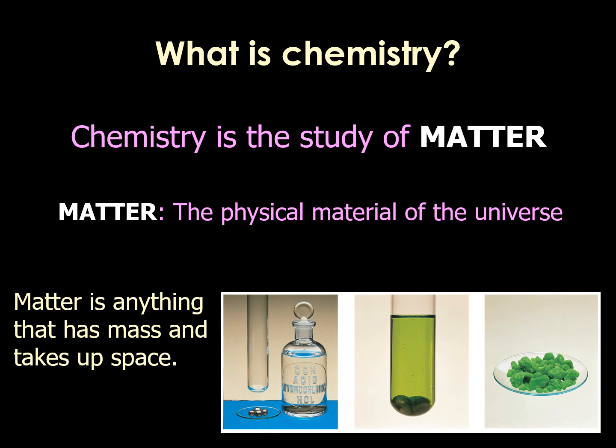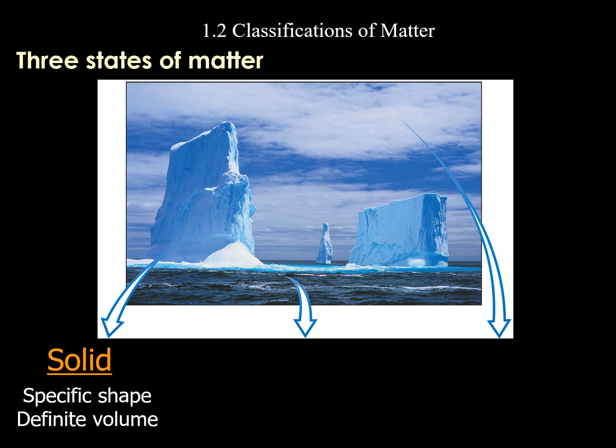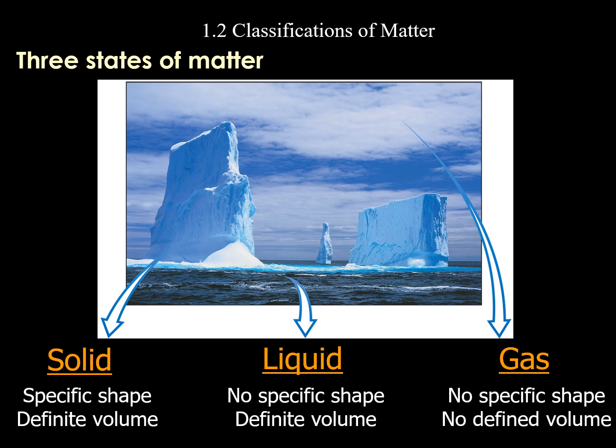Chemistry is the study of matter. There are three states of matter — let's take water as an example. Solid: ice has a specific shape and a definite volume. Liquid: water takes the shape of its container — put it in a cup or a toilet, it takes that shape — but has a definite volume. Gases have no specific shape and no definite volume.